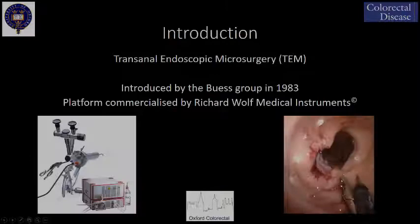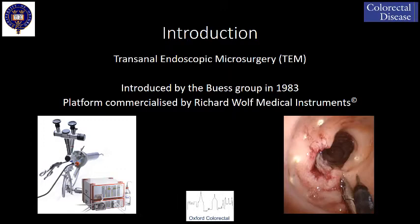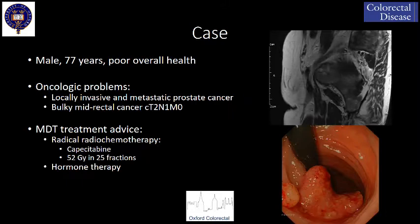Transanal anoscopic microsurgery was introduced by the Boos Group in 1983. The technique has gained international interest and is currently widely implemented for both benign and malignant lesions which aren't amenable for colonoscopic resection.